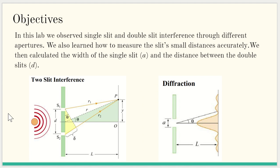The objectives. In this lab we observed single slit and double slit interference through different apertures. We also learned how to measure the slit's small distances accurately. We then calculated the width of the single slit A and the distance between the double slits D. Here you have your double slits and diffraction per single.